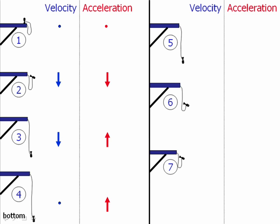At motion five, you're moving up towards the platform, so your velocity vector is up. And the bungee cord is causing you to speed up — to rocket up towards that platform — so your acceleration vector must be in the same direction as the velocity vector, which is up. At motion six, you're still moving up towards the platform, but now you're slowing down, such that the acceleration vector has to point in the opposite direction of the velocity, or down.